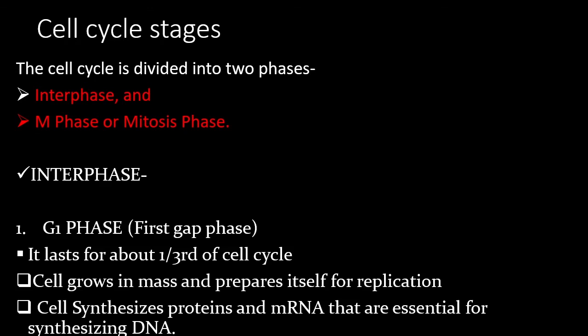One more point: neurons do not have centrioles. Centrioles help during cell division, so without centrioles, division is not possible. Also, neurons are already connected with each other — brain neurons connect to motor neurons to limb neurons forming functional pathways. These connections are already established, so replacing neurons would cause those connections to be lost.